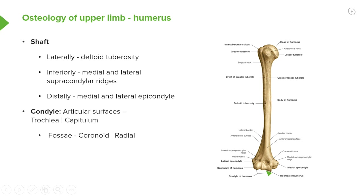We can also see just proximal to these condyles two small depressions called the radial fossa and the coronoid fossa. These depressions allow the radius and ulnar bones to sit within them when we fully flex the elbow, accommodating bony structures on the ulna and the radius. We will come back to them when we cover the elbow joint.